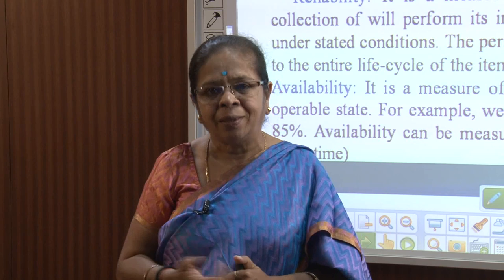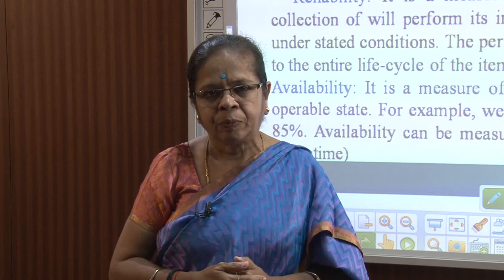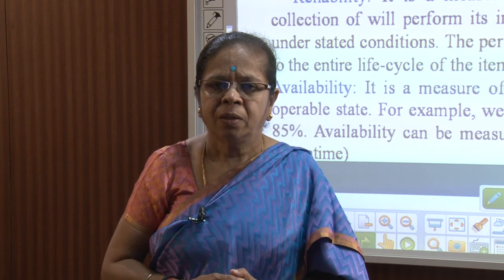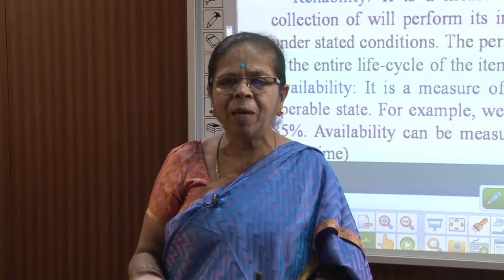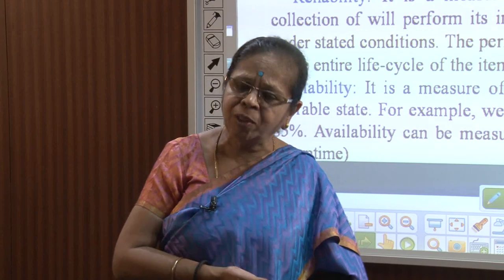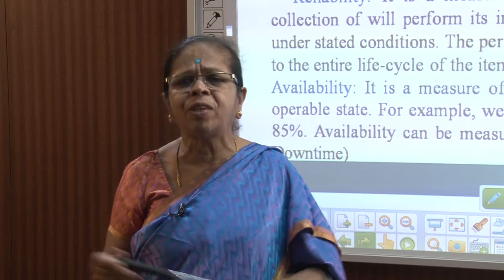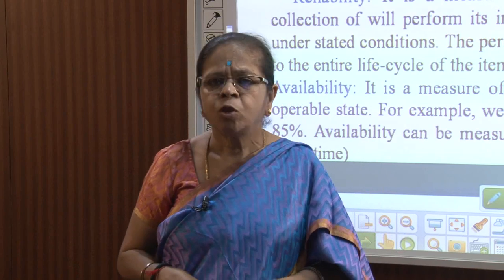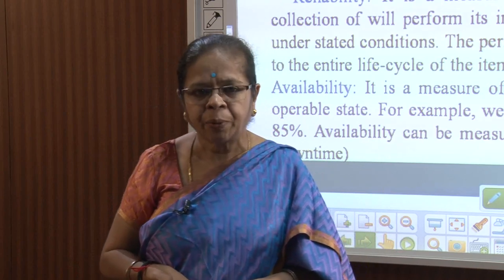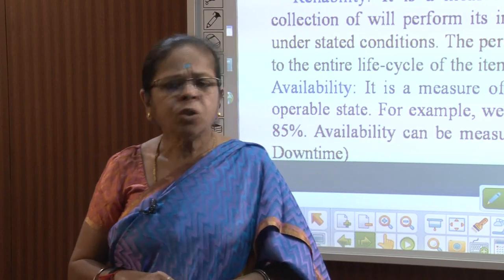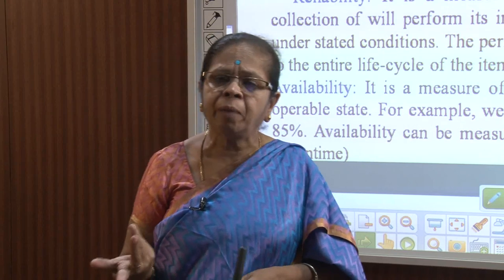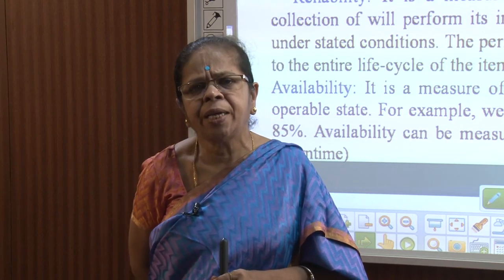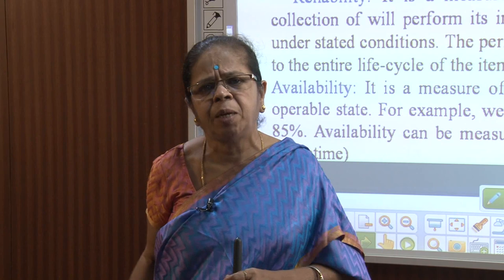The period can vary from a specified time to the entire life cycle of the item. Every item has a life cycle — just like living beings, even non-living things have a life because everything is made of matter, and wear and tear is always there. This is the formal definition of reliability for any item, system, or product.